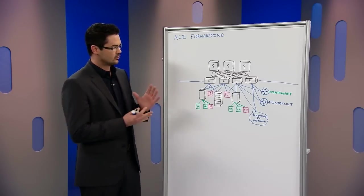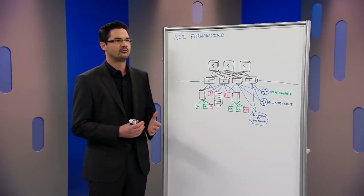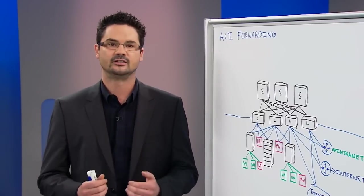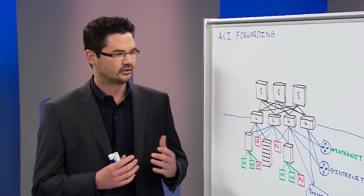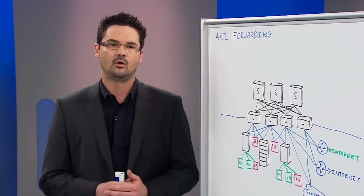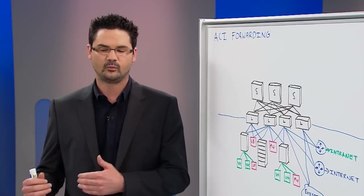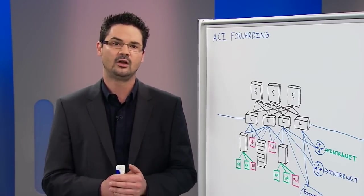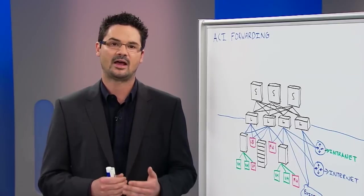So to kick off, what I've drawn here on the board is a spine-leaf architecture known as a Clos architecture. This is the base architecture of how we design and deliver ACI fabrics. There's a lot of advantages to this architecture. One, it promotes the traffic east to west, which is the way data center traffic patterns are moving today, rather than the north-south traffic patterns we've been designing in the past.